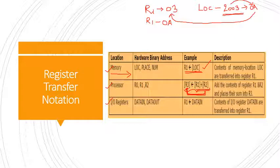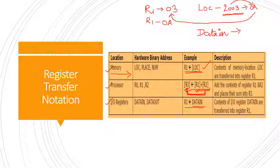For using an IO register in register transfer notation: R1 ← [DATAIN] means the content of IO register DATAIN is transferred into register R1. Similar to location LOC, you assume DATAIN is a port address, and the data held at that port address is moved to register R1. That's all with register transfer notations.